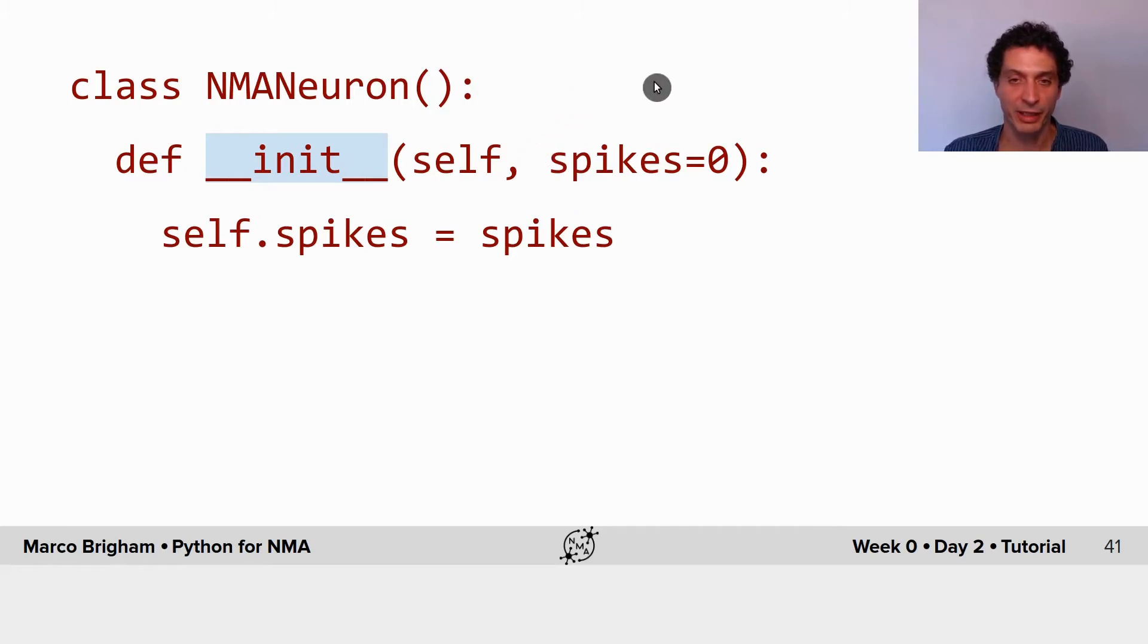Here we are specifying that our class has a parameter with a default value of zero, and our attributes and our methods—our variables and functions interior to the class—they have this little self preceding.